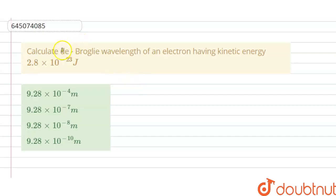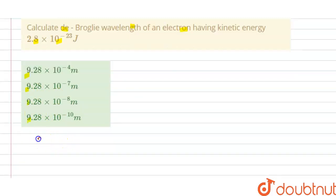Hello students, today our question is calculate de Broglie wavelength of an electron having kinetic energy 2.8 into 10 power minus 23 joule. A, B, C, D options are given here. So we have to choose the correct option.